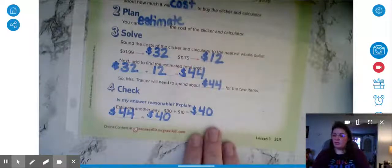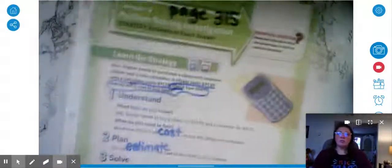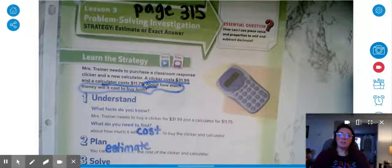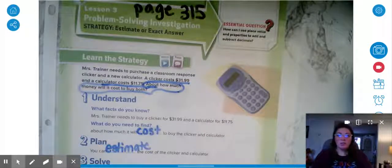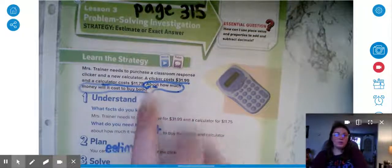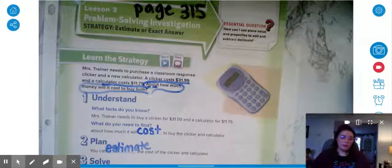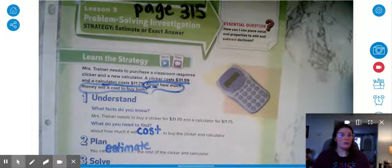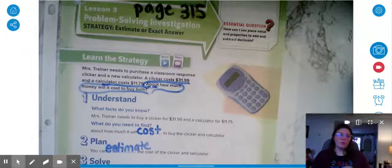So for today's lesson you're going to need to determine if you have to estimate or find an exact answer. Keep in mind when you're estimating you'll usually see the word about. But read carefully because it might not always be there. The directions might also say find an estimate or to round. So be careful with your reading.